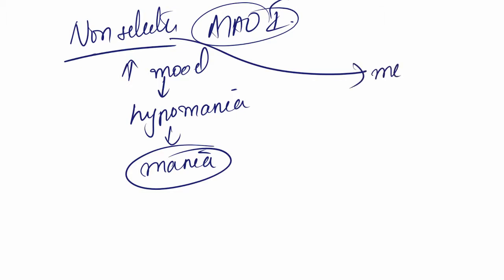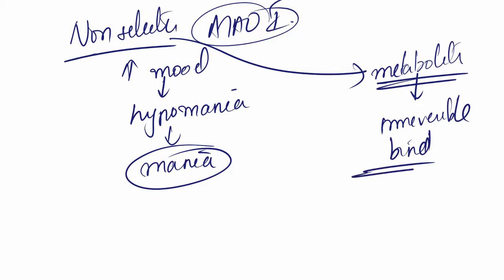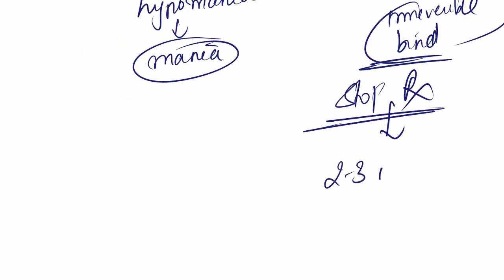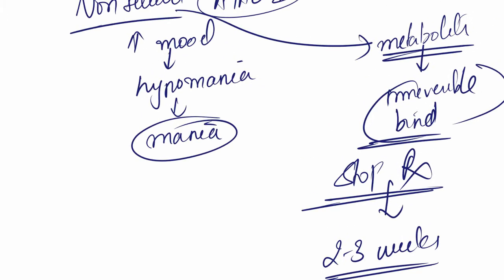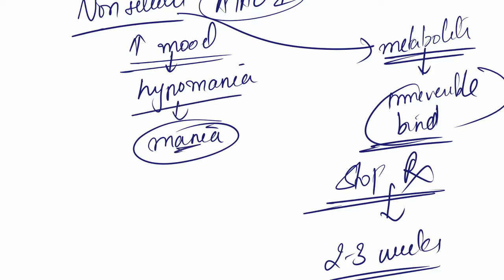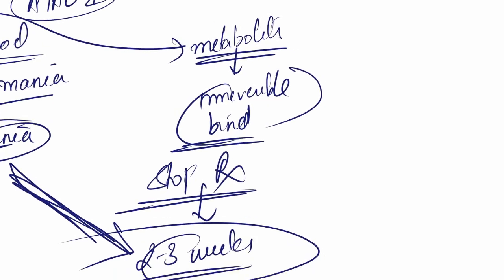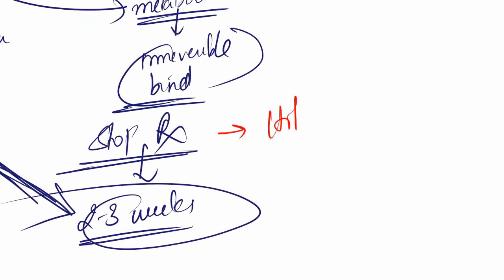One of the other problems was these things don't act directly, they act via metabolites. These metabolites irreversibly bind with the receptors. Since they irreversibly bind, even after you stop the treatment, the effects are still going to last for two to three weeks. If the person goes from elevated mood to hypomania to mania, you're going to have to deal with the maniac patient for two to three weeks, which is not good. These drugs are called hit and run drugs.